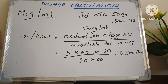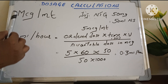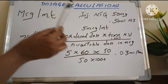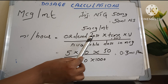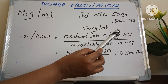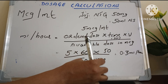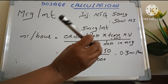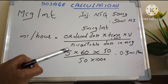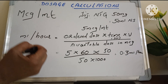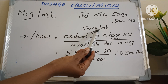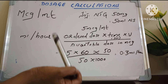Here is the formula for calculating microgram per minute. ml per hour is equal to ordered dose multiplied by time multiplied by volume, divided by available dose in microgram. So here we see what is the ordered dose — the order of the physician is 5 microgram per minute.